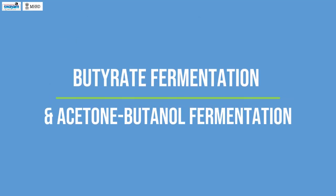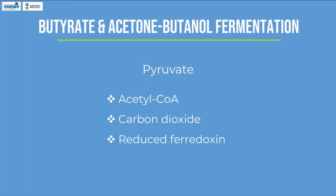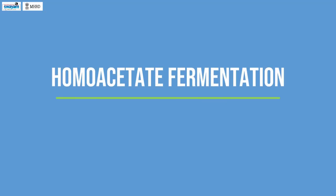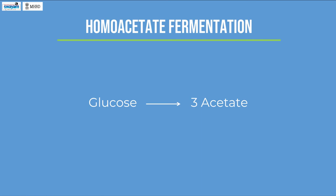Butyrate Fermentation and Acetone-Butanol Fermentation. Butyrate fermentation is carried out by Clostridium species such as Clostridium butyricum. Butyrate production involves the following steps: pyruvate is converted to acetyl-CoA, carbon dioxide, and reduced ferredoxin by pyruvate ferredoxin oxidoreductase; acetyl-CoA is condensed to acetoacetyl-CoA by thiolase, which is subsequently reduced to butyryl-CoA; the CoA of butyryl-CoA is transferred to acetate to form acetyl-CoA, leaving butyrate. Acetate Fermentation: acetate is formed during fermentation by very few microorganisms, such as Moorella thermoacetica and Acetobacterium woodii, where glucose is converted to three acetate molecules.